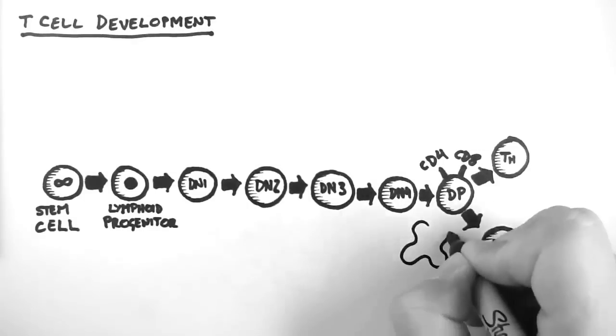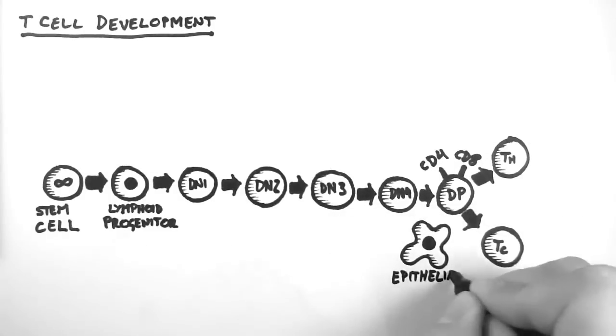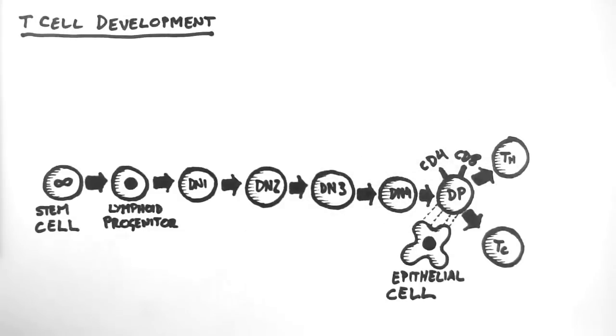Now the double positive cell interacts with thymic epithelial cells. And this helps it decide whether to become a helper T cell or a cytotoxic T cell. There are actually some cells which become neither and thus perish. But that's a whole other story.